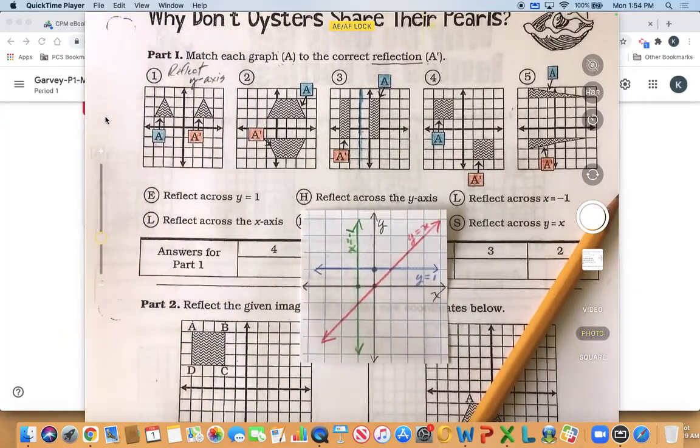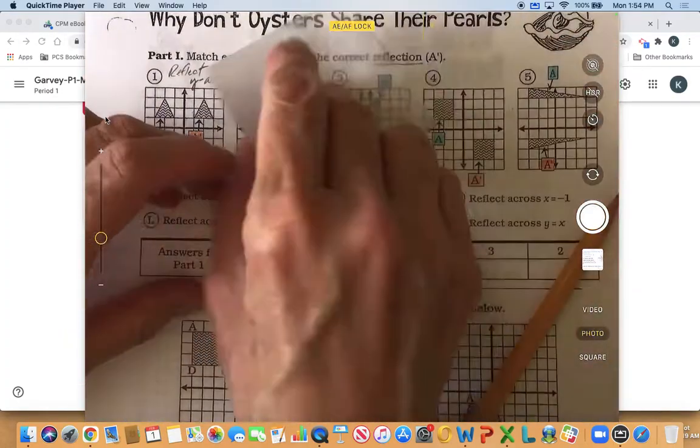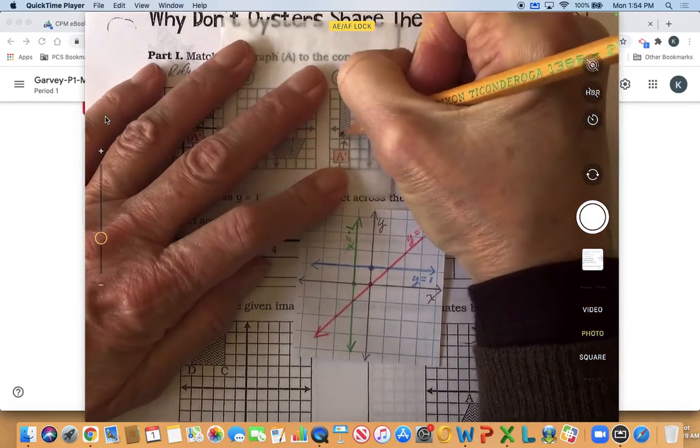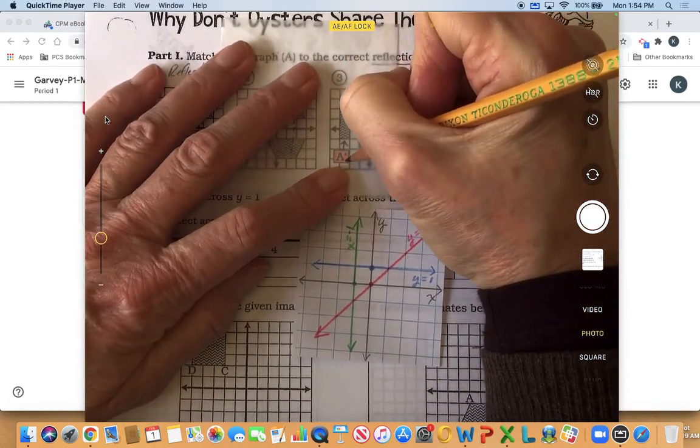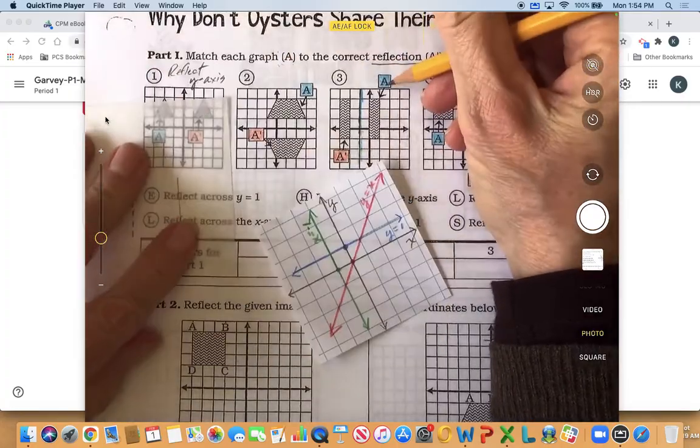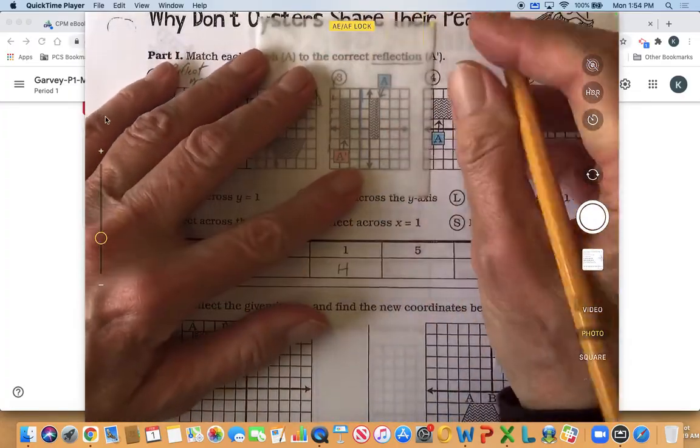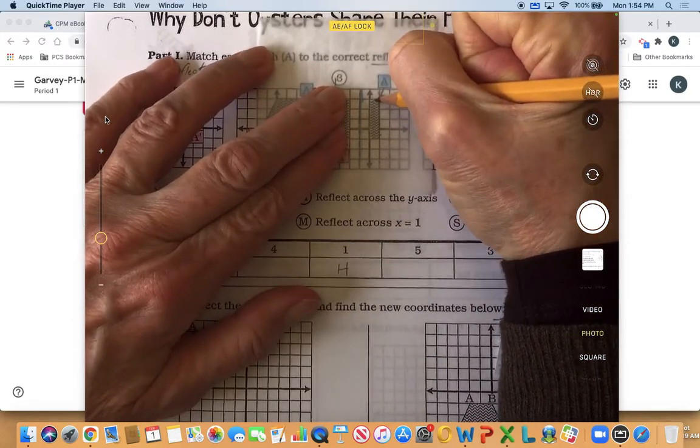And again I can check that using some patty paper so I can draw the original. Oh that's not the original that's A prime, see that's why I color coded them because it's easy to get them mixed up. Okay so here is my original.